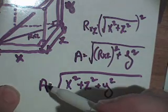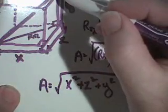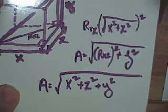So to find the diagonal of the three-dimensional shape, we just add to that Y squared. And that gives us the diagonal across a three-dimensional cube. We'll call that A.